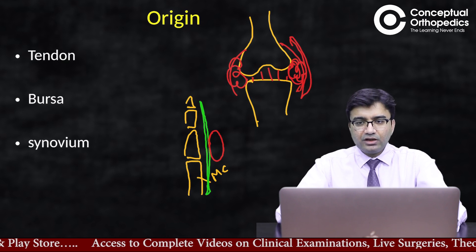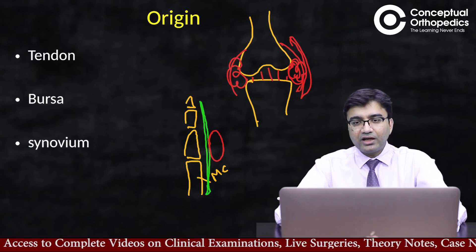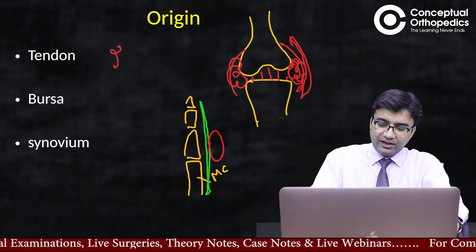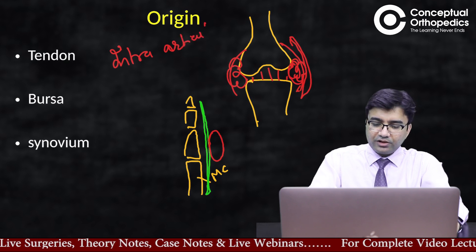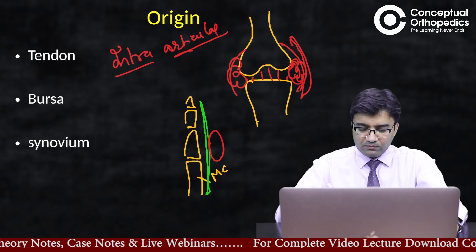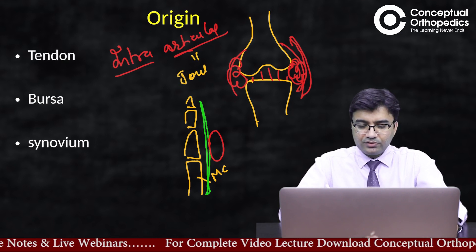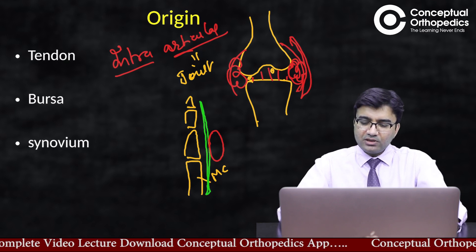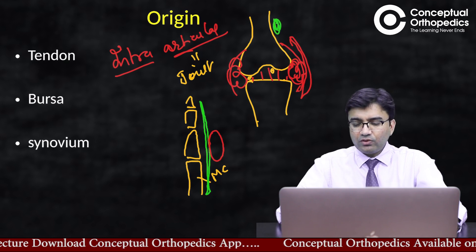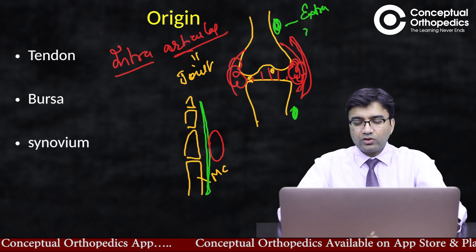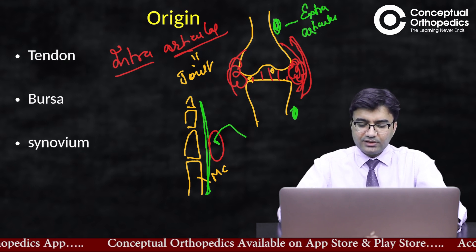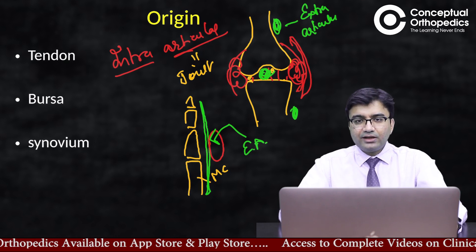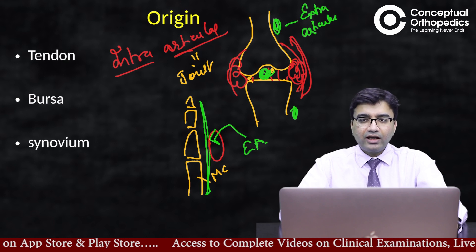There are a few basic concepts students often get confused about: what is intra-articular versus extra-articular. When we deal with the location of these tumors, their behavior, and planning their treatment, we must know where they are arising from. 'Articular' means the joint — so whenever the tumor arises from within the joint, it is intra-articular. If the same tumor arises away from the joint, it is extra-articular. Our treatment plan will vary depending on the location of the tumor.